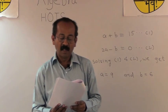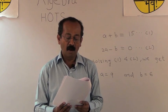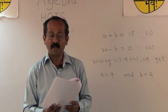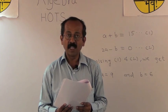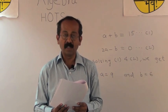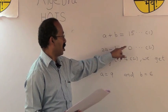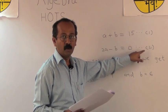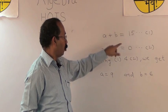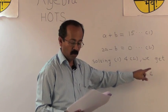In the second vessel, the ratio of acid to water is 1 is to 3. If B liters of liquid be drawn from this vessel, the liquid drawn contains B upon 4 liters of acid and 3B upon 4 liters of water. So from the second condition, we get equation 2A minus B equals 0, which is equation number 2. Solving equations 1 and 2, we get the value of A equals 9 and B equals 6.